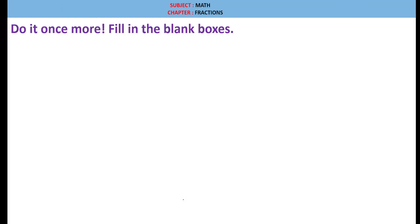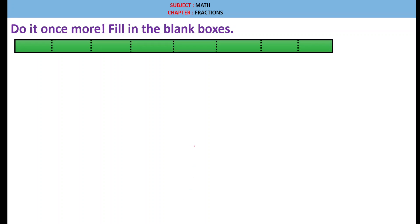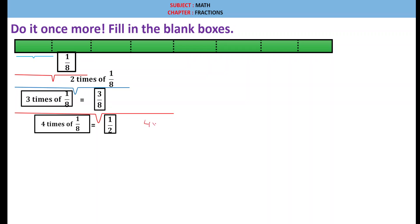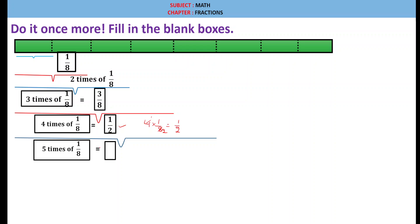Do it once more — fill in the blank boxes. Here is a strip of paper divided into eight parts: one, two, three, four, five, six, seven, eight. This will become 1 eighth. Two times 1 by 8, then three times 1 by 8 is 3 by 8. Four times 1 by 8 equals 1 by 2, because 4 × (1/8) = 1/2. Five times 1 by 8 is 5 by 8.